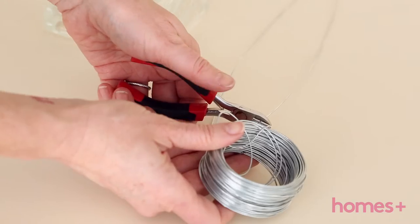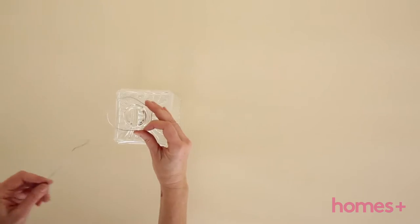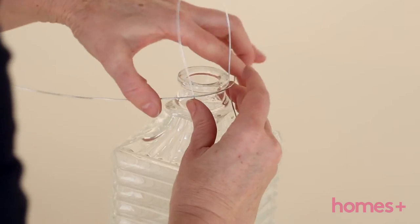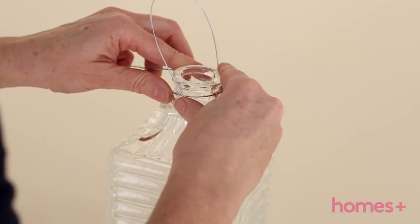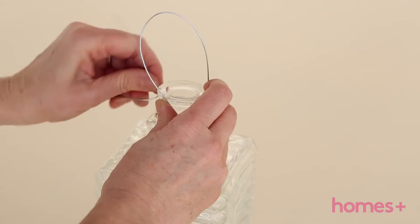Cut two strips of wire. Place one piece of wire around the neck of the bottle and twist and attach, and use the second piece to make a hook.